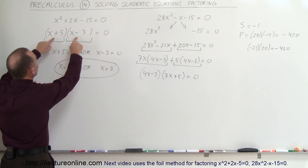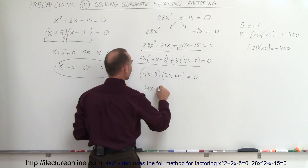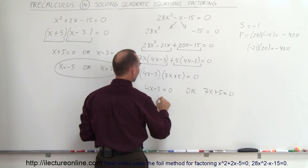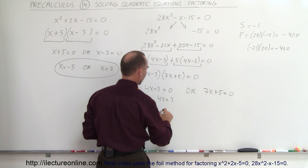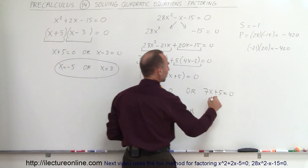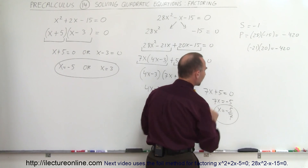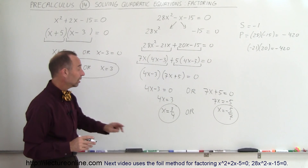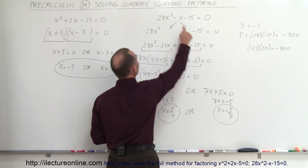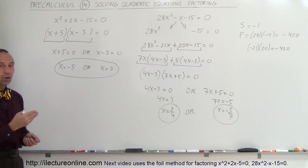Now I'm in the same situation as before — two things multiplied together equal 0, so either one or the other is 0. That means 4x minus 3 equals 0 or 7x plus 5 equals 0. Moving terms across: 4x equals 3, so x equals 3 divided by 4; or 7x equals minus 5, so x equals minus 5 divided by 7. My answer for the second equation is x equals 3 fourths or x equals minus 5 over 7. To check, plug these values back into the original equation to verify the left side equals the right side. That's how we solve quadratic equations using factoring techniques.